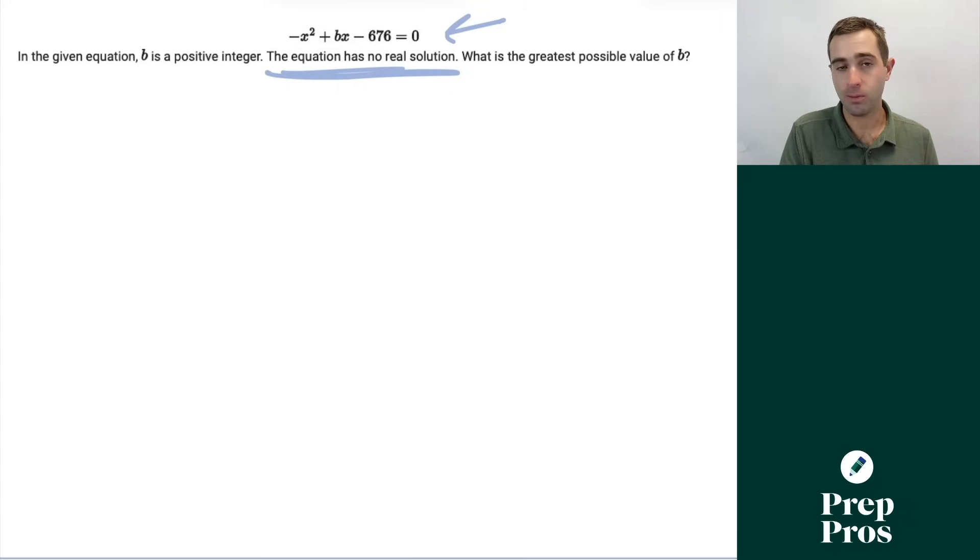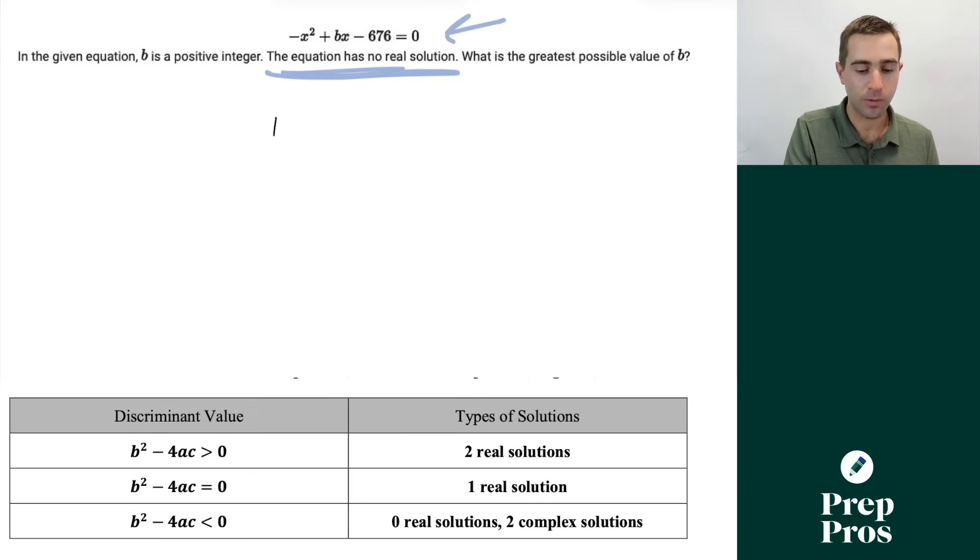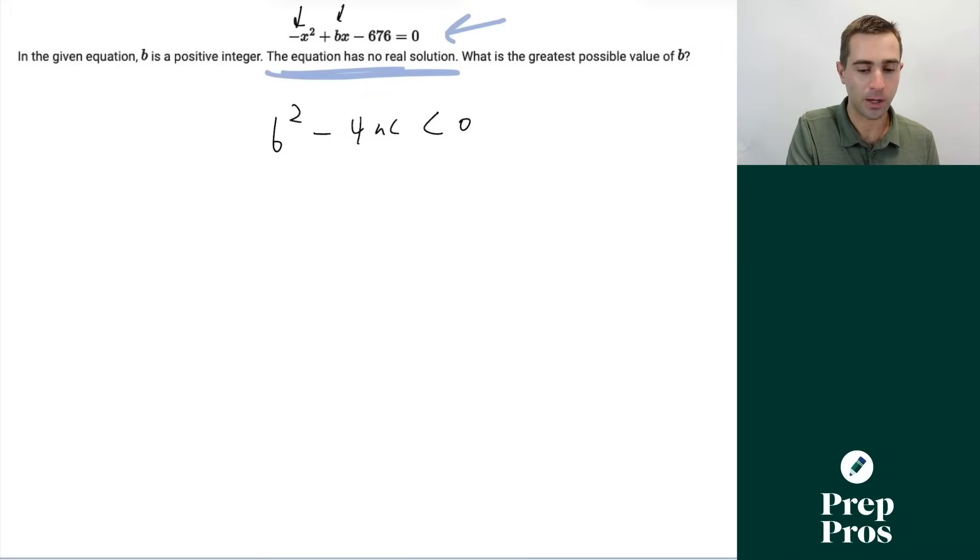As you can see in that table I popped up on the screen, if we want to have no solutions, B squared minus 4AC must be less than zero. We can see our A value is negative 1, our B value is B, and our C value is negative 676. We're now just going to plug those in. We'll get B squared minus 4 times negative 1 times negative 676 has to be less than zero. This is going to give us that B squared minus 2,704 has to be less than zero. We'll add that over. That will give us that B squared is less than 2,704.